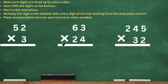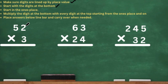In front of you, you have three problems. Let's start with the first one — we have 52 times 3. Our criteria for success says make sure the digits are lined up by place value. As you can see, we have the ones place and we have the tens place. So you've got to make sure they are lined up. Then it says start with the digits at the bottom — we only have one digit at the bottom and we see a 3. Start in the ones place — the 3 is in the ones place and is at the bottom. So we're going to multiply the digit at the bottom with every digit at the top, starting from the ones place and on.